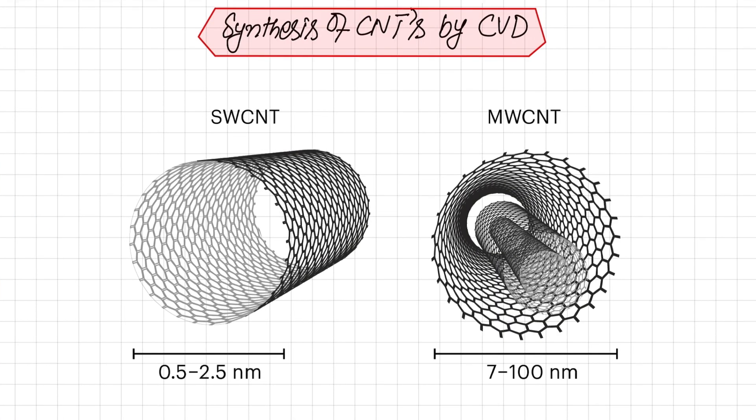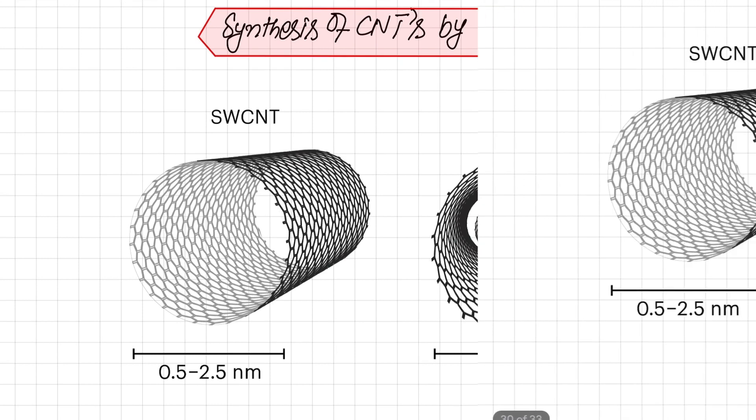A carbon nanotube is a tube-shaped material made of carbon having a diameter measuring on the nanometer scale. In this diagram there are two types of carbon nanotubes: the first type is called single-walled carbon nanotube, whereas the second type is called multi-walled carbon nanotube or MWCNT. We will discuss how these carbon nanotubes are actually synthesized by chemical vapor deposition method.